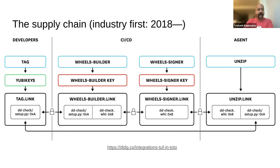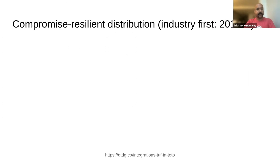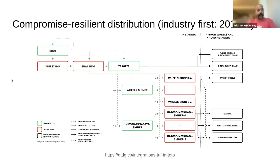Crucially, when users install one of these, the agent transparently calls TUF and In-toto in the background to verify the software supply chain. It checks that the Python wheel was produced by the CI/CD, and then actually unzips it and checks the source code was literally signed by one of our developers using the YubiKeys. That's what gives this compromised resiliency — even if someone tampers with the CI/CD, they can't forge our developer signatures. We've been doing this since 2018, before software supply chain security was cool, and we have three years of data on releasing this software.